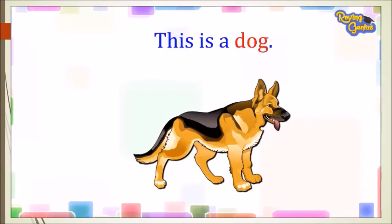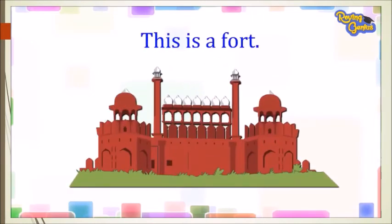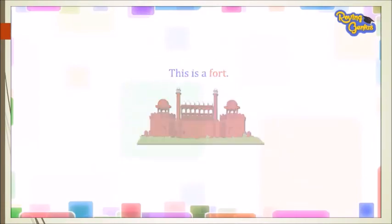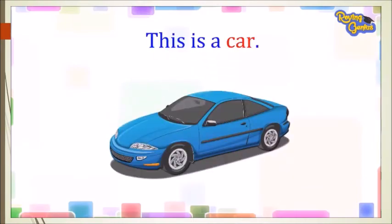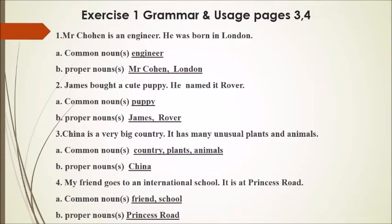Look at the following pictures. This is a boy. This is a dog. This is a fort. This is a car. Let's do Exercise 1 on your book Grammar and Usage, pages 3–4. Write down the common nouns and proper nouns in the following sentences.